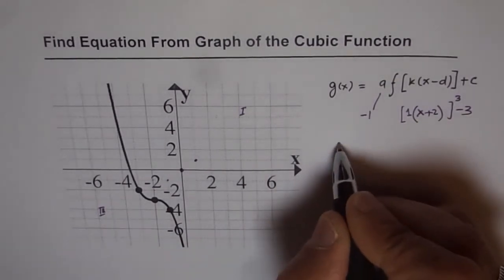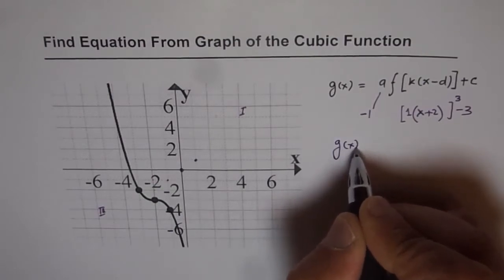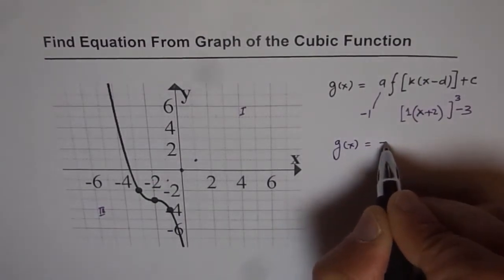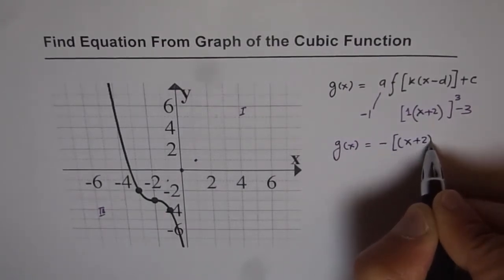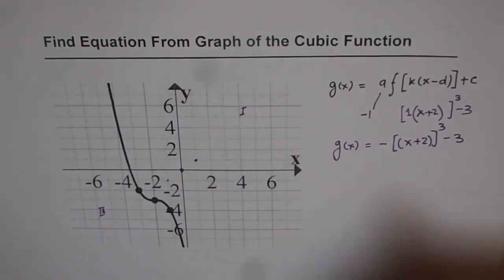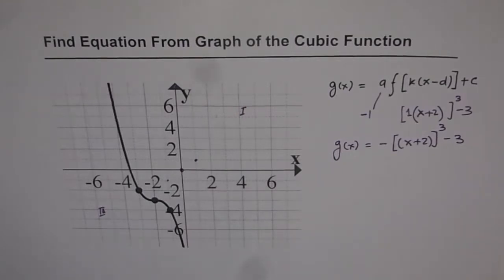Therefore, the function can be written as g(x) equals minus (x plus 2) cubed minus 3. So that gives us the transformed equation of this particular function.